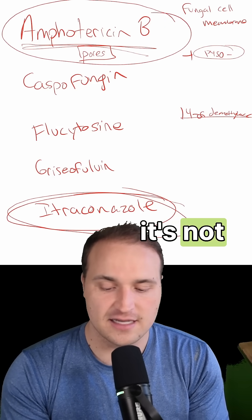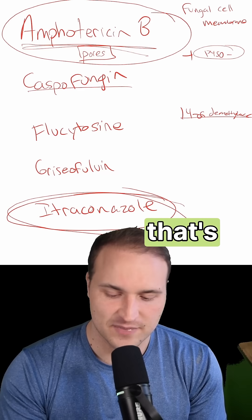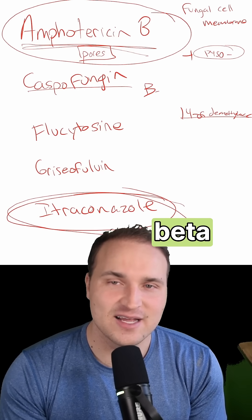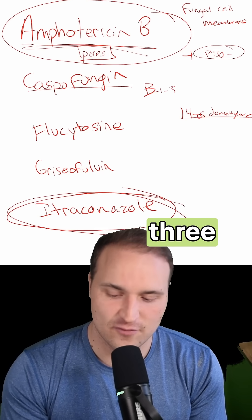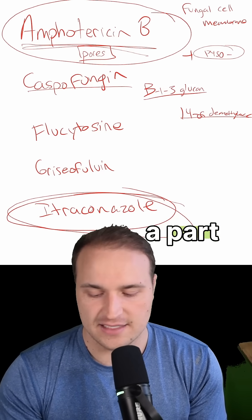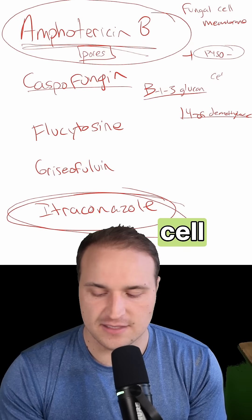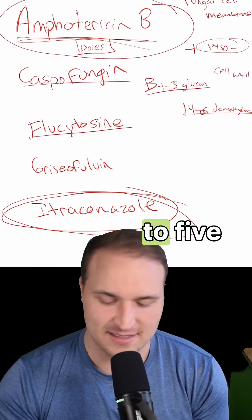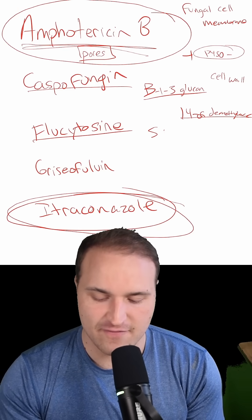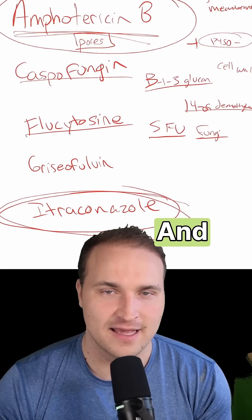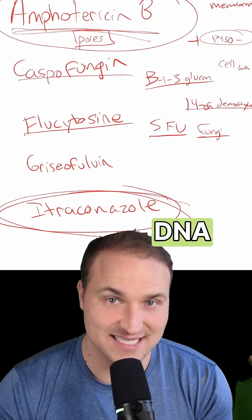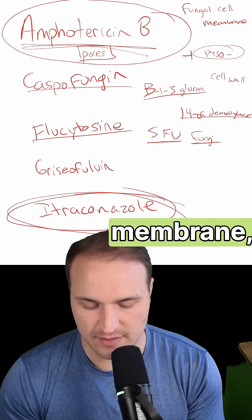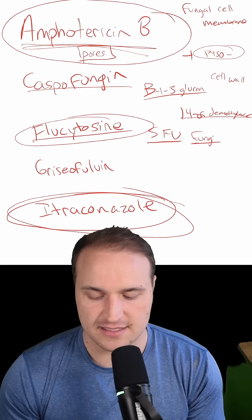Caspofungin is an echinocandin and it inhibits beta-1,3 glucan synthesis, which is part of the fungal cell wall, not the membrane. What about flucytosine? Well, that's converted to 5-FU in fungi, and this inhibits DNA and RNA synthesis, so that's not going to be associated with the membrane — it's not flucytosine.